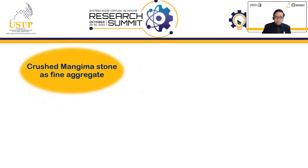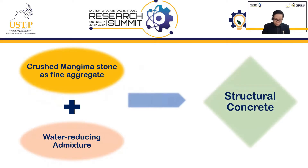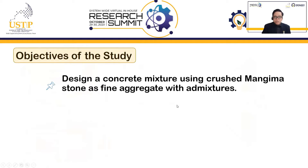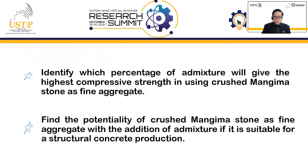I am incorporating crushed Mangima Stone as fine aggregate with the addition of water-reducing admixture in order to produce a structural concrete mix. The objectives of the study are: first, to design a concrete mixture using crushed Mangima Stone as fine aggregate with admixtures; second, to determine the design mix that can provide the optimum compressive strength using crushed Mangima Stone as fine aggregate with admixture; third, to identify which percentage of admixture will give the highest compressive strength; and fourth, to find the potentiality of crushed Mangima Stone as fine aggregate with addition of admixture if it is suitable for structural concrete production.